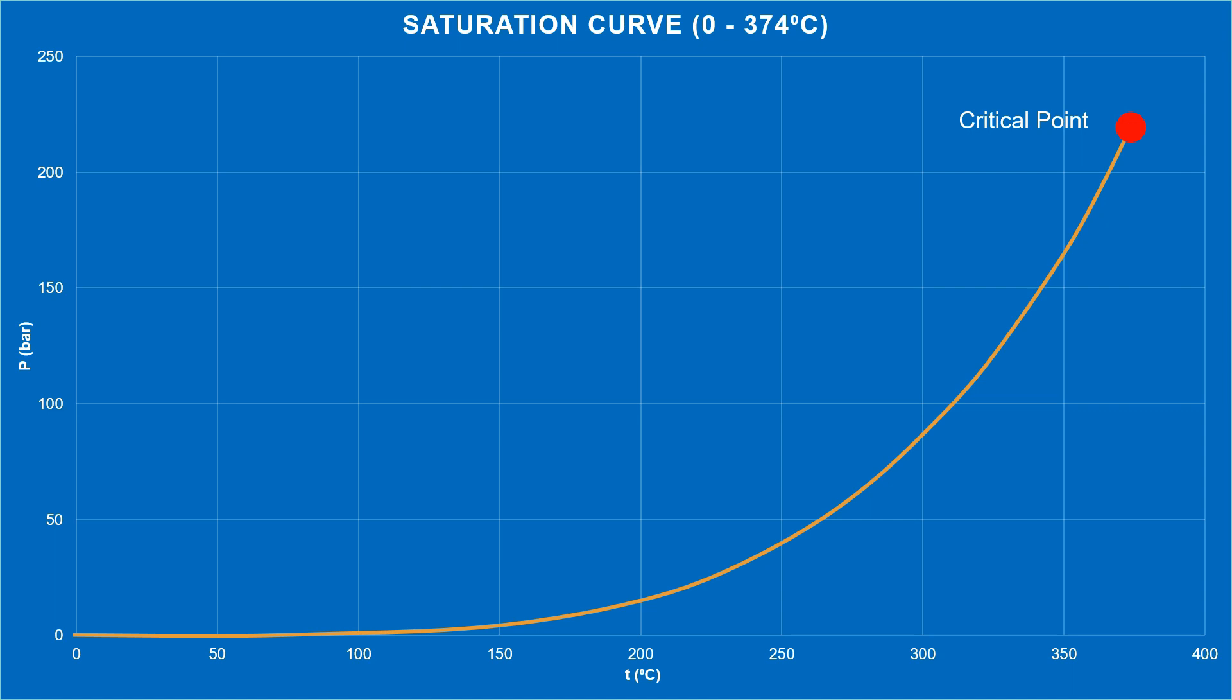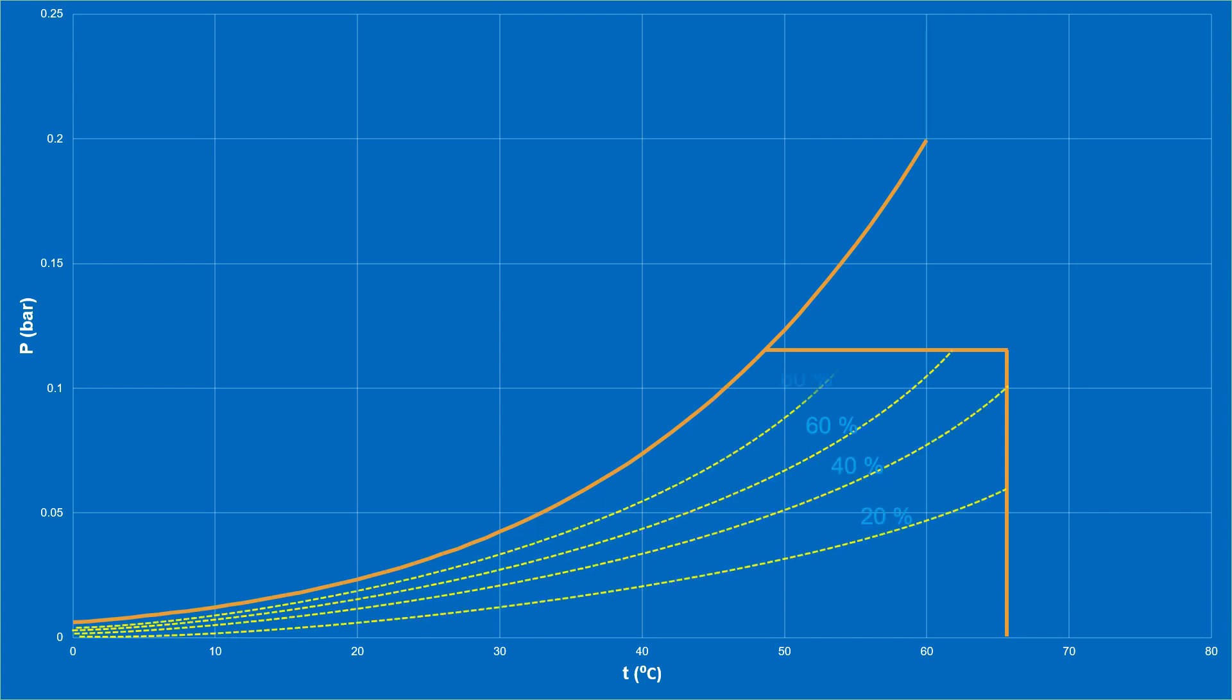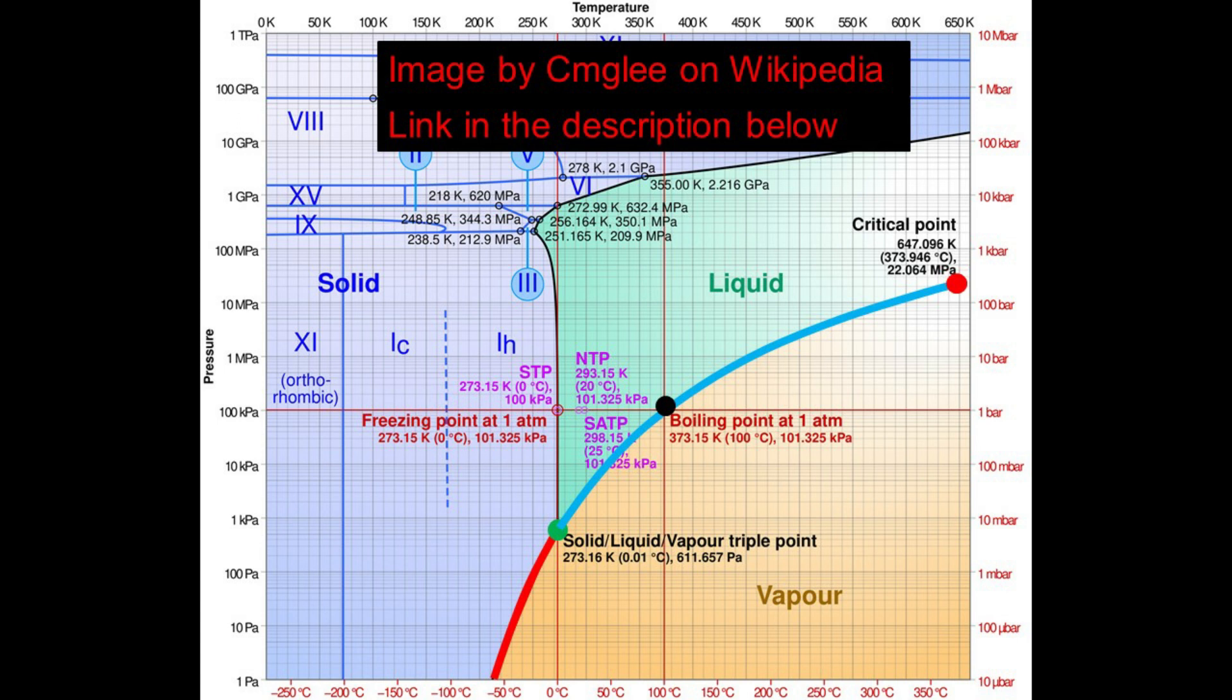Now we will focus on this small area to see it more clearly. We now have the psychometric chart. Now let's look at the phase diagram of water.